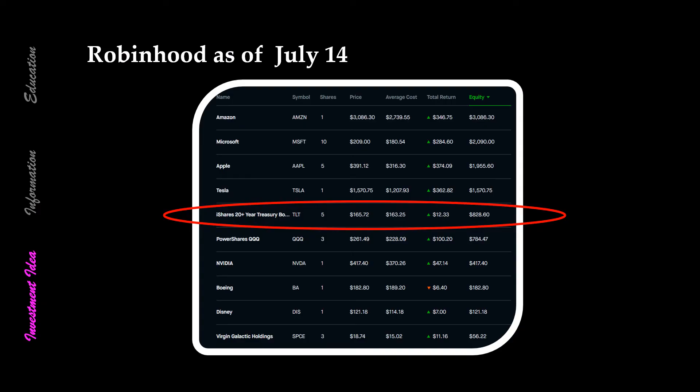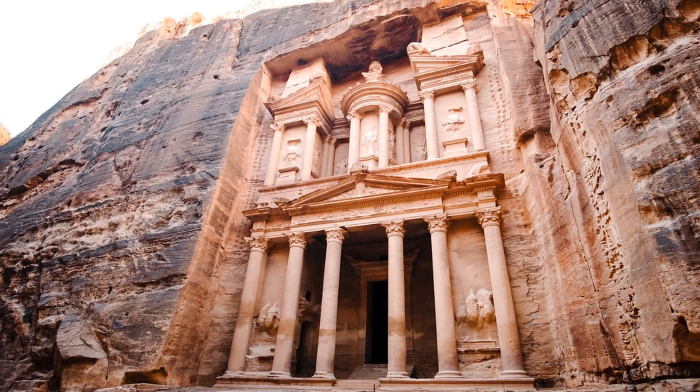As you can see, five shares of TLT are included in my portfolio, along with one share of Amazon, one share of Tesla, and one share of Nvidia, which are newly included as well. I will share my investment ideas next time. Today I've discussed bonds and TLT, and next time I'm going to discuss more details about bonds.